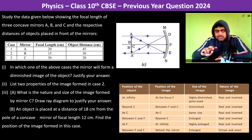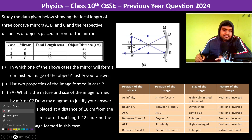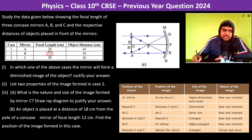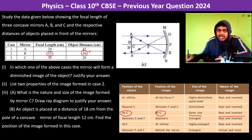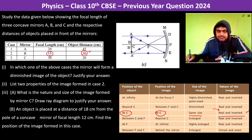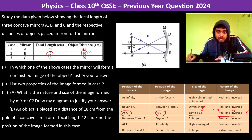Next, list two properties of the image formed in case 2. Case 2 corresponds to focal length 15 cm and object at 30 cm, so the object is placed at 2f. From the table, the image is the same size and is real and inverted. So the properties are: the image is real, inverted, and the same size as the object.